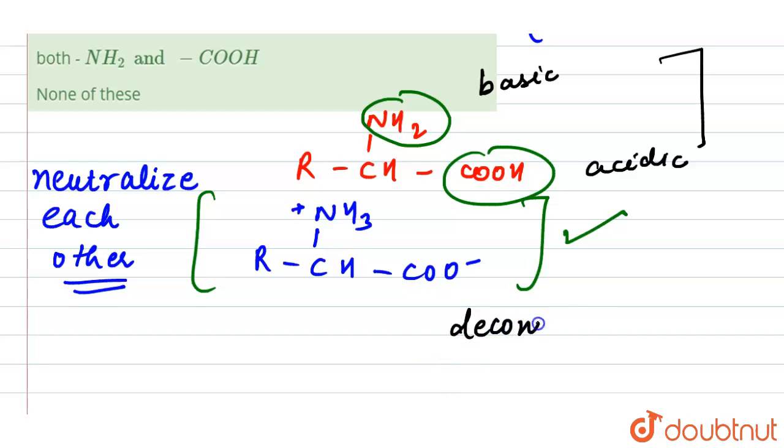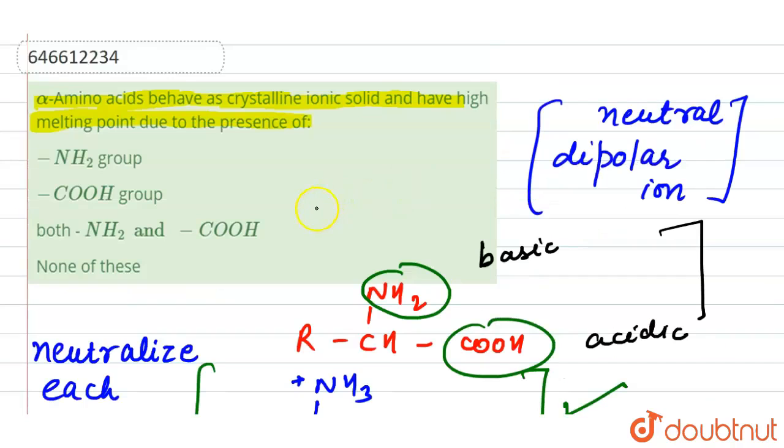Zwitter ion formation is possible only because of the presence of both a basic and an acidic group. So our answer is both NH2 and COOH.